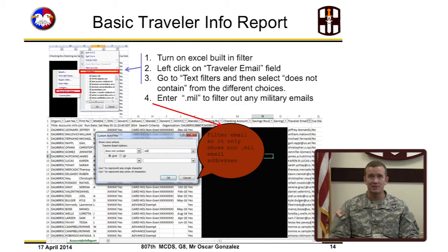To find any emails that do not belong, turn on Excel's built-in filter. Left-click on the Traveler Email field. Go to Text Filters and then select Does Not Contain from the different choices. Enter .mail to filter out military emails. Now you see all the invalid email addresses.